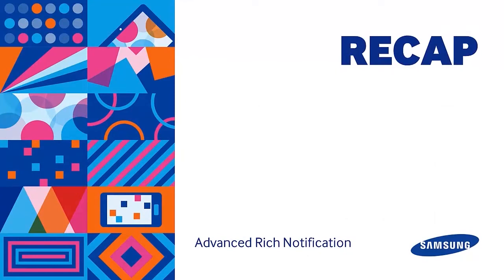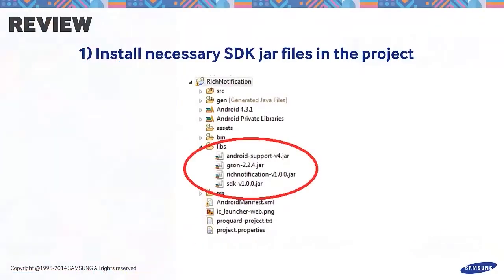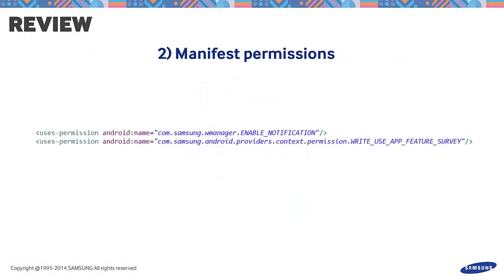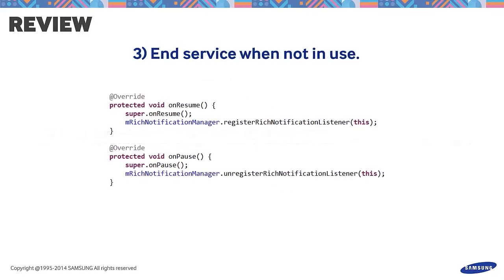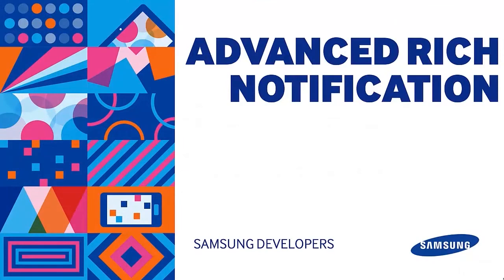Let's sum up the things we have discussed and covered in this episode. These are the things that we need to remember: always include the SDK jar files in the project, include the important manifest permissions, and finally, always end the service when it is not in use. We hope this tutorial helped. For inquiries, please post your questions on the official forum at developer.samsung.com. Thank you.